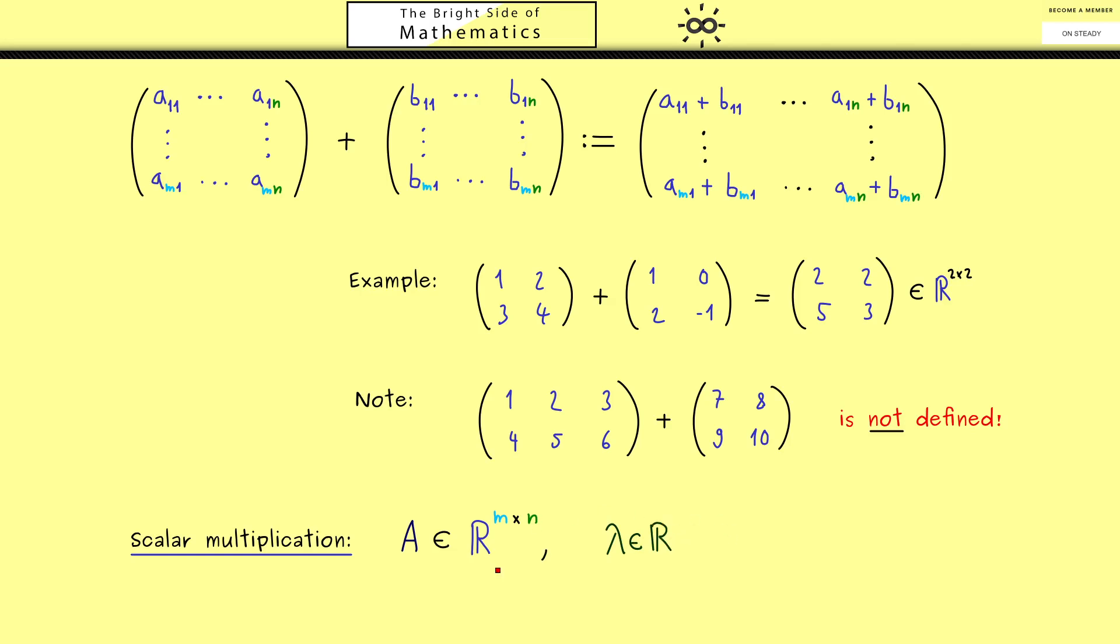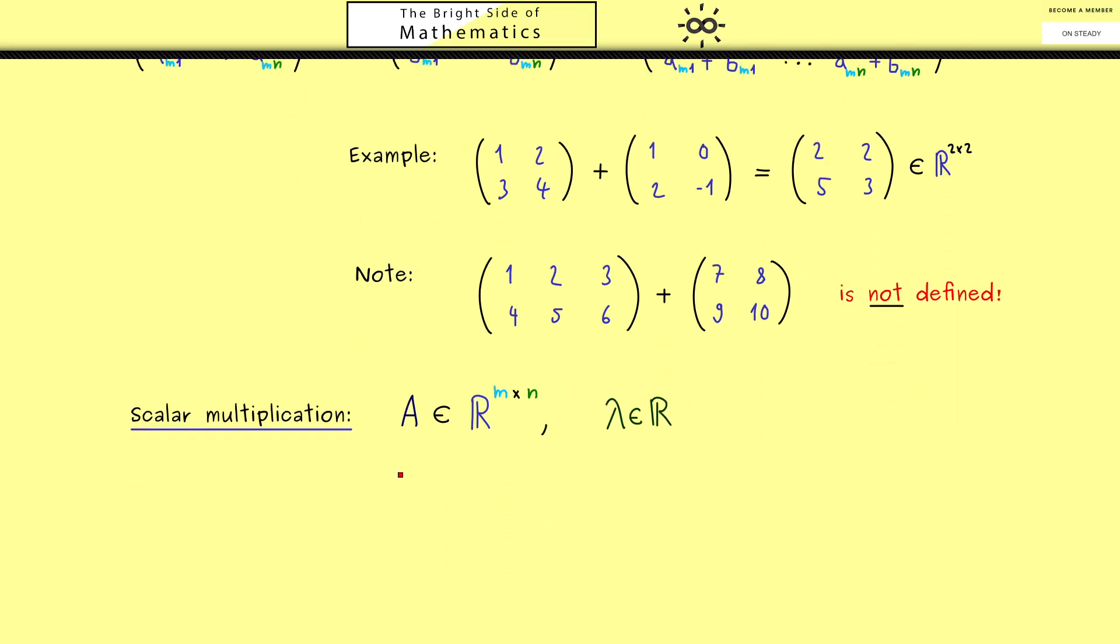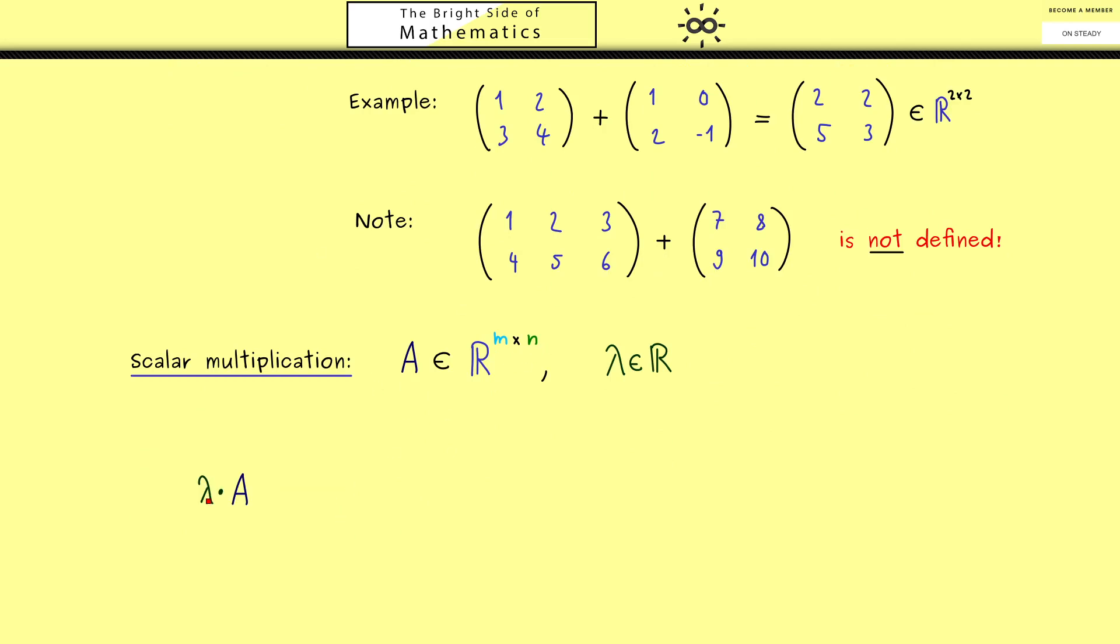Hence again we take a matrix A and in addition a scalar, a real number lambda. And now we have to explain what lambda times A means.